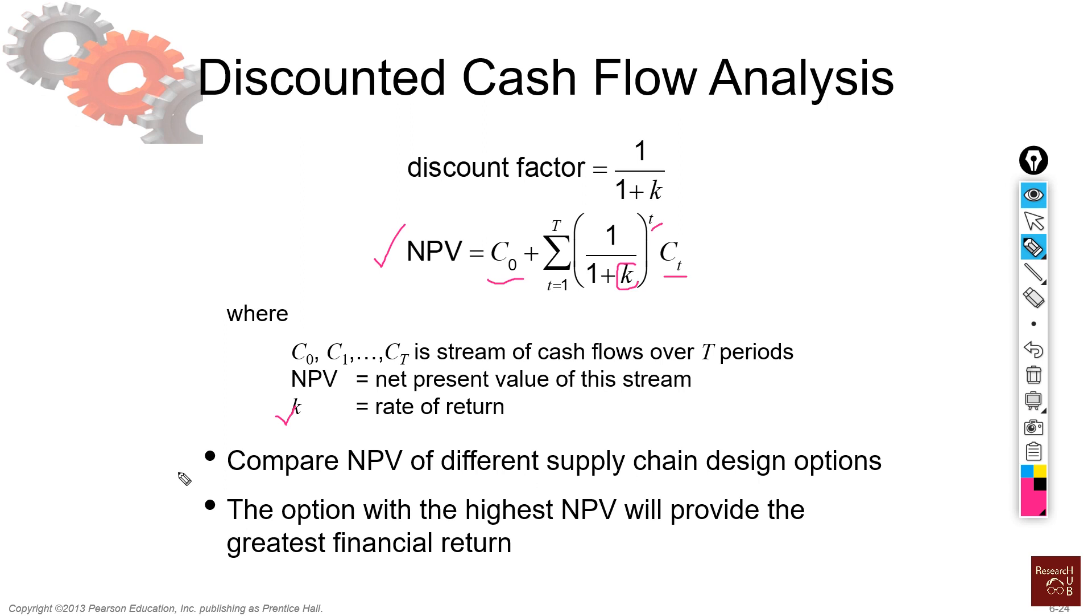In this case we will look into this from the supply chain context, and our goal is to compare net present value of different supply chain design options. So we will look into designing supply chains in different ways and calculate NPV for all the different options and see which one gives us the highest return, highest profit, or highest cost savings.